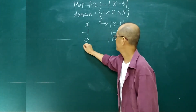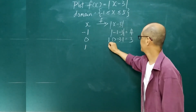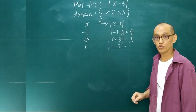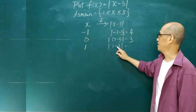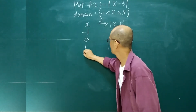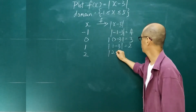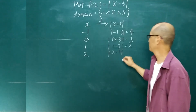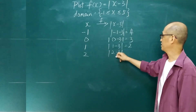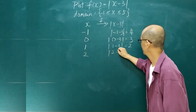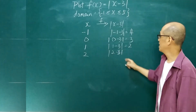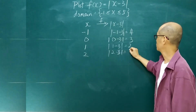When x is 1, we get 1 minus 3, which is negative 2, and the absolute value of negative 2 is 2. When x is 2, we get 2 minus 3, which is negative 1, and the absolute value of negative 1 is 1.